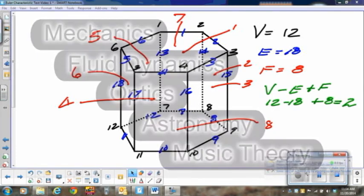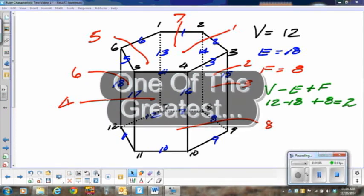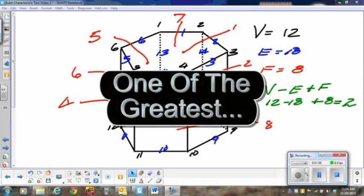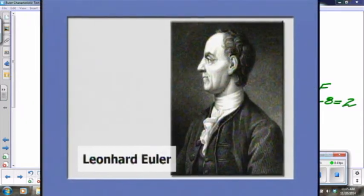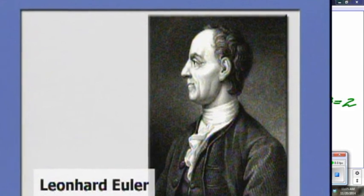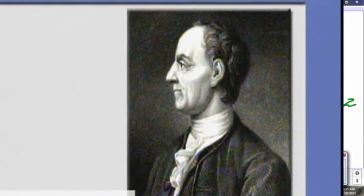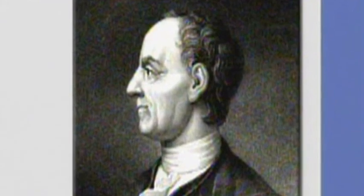Euler is considered to be the preeminent mathematician of the 18th century and one of the greatest mathematicians that have ever lived. He is also one of the most prolific mathematicians. His collective works fill over 60 volumes of about 640 pages each. He spent most of his adult life in St. Petersburg, Russia and in Berlin, Prussia.